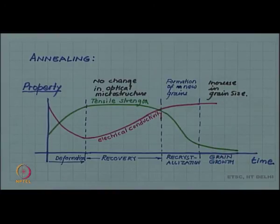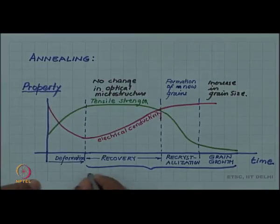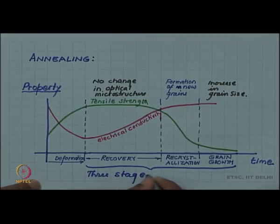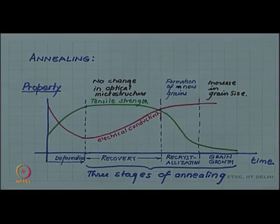This entire process—recovery, recrystallization, and grain growth—are three stages of annealing. We will look at them one by one.